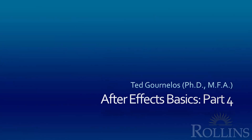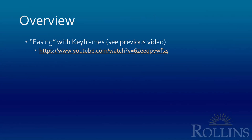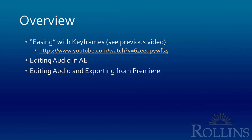This tutorial is the fourth part of a four-part series and covers a couple of different things in After Effects. First, we'll talk about easing with keyframes. Second, we'll look at how to edit audio in After Effects. Third, we'll look at exporting from Adobe Premiere. Audio is kind of clunky in After Effects, so unless you're animating to the audio you might want to edit it in Premiere instead. Both methods will be shown so you can choose which works best for your project.